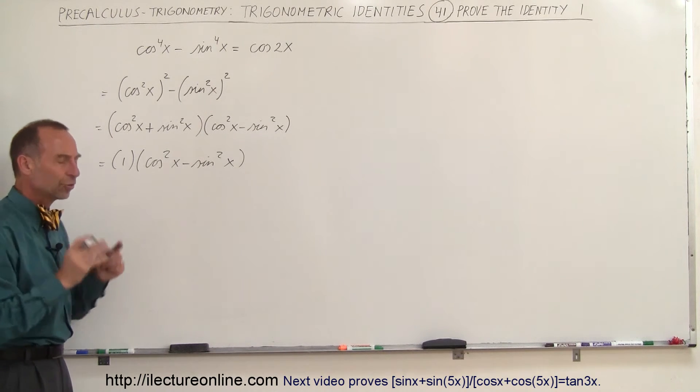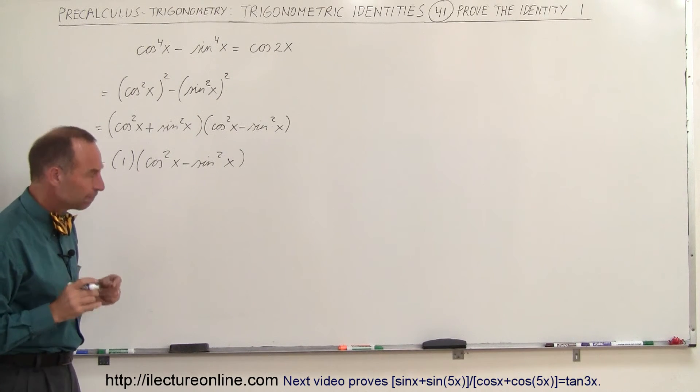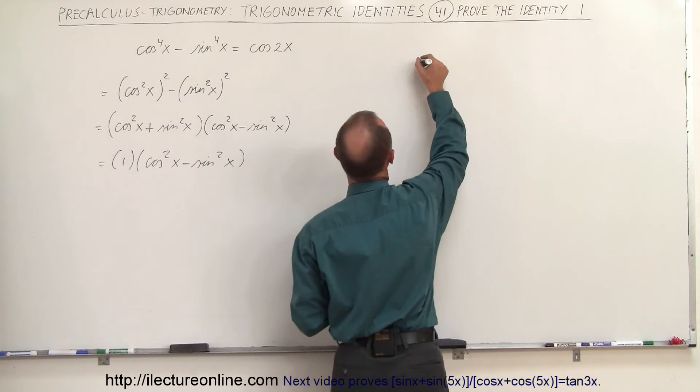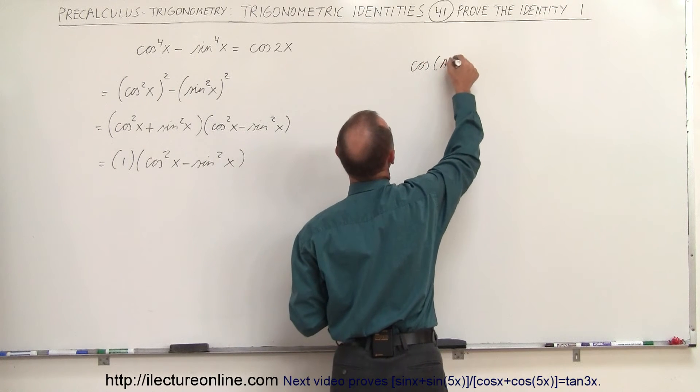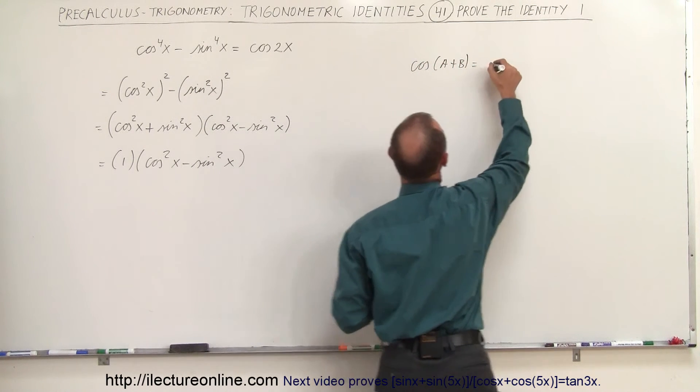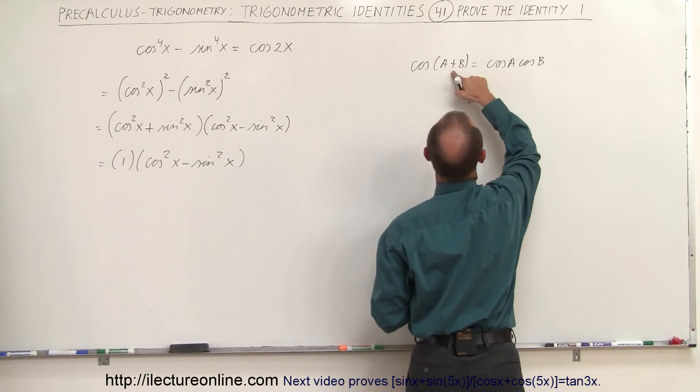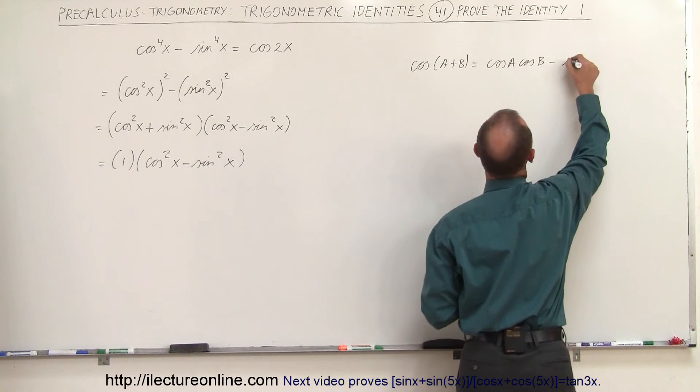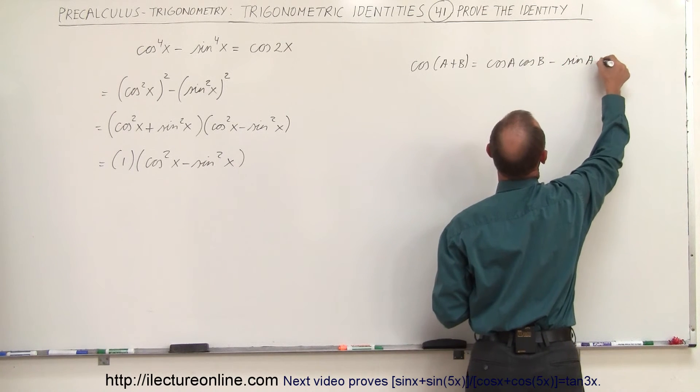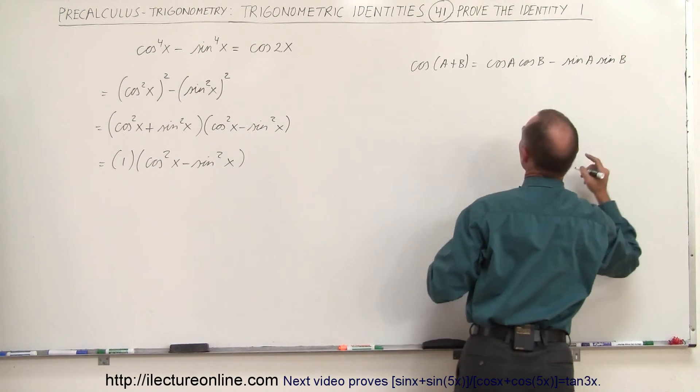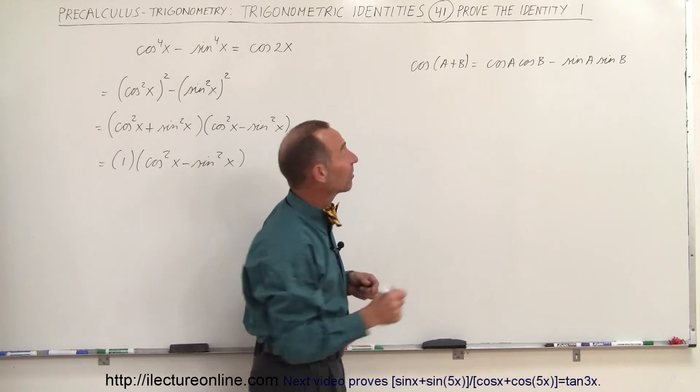Now what I'm going to do here is go back and remember this one. If we have the cosine of a plus b, that is equal to the cosine of a times the cosine of b, and if this is plus that becomes minus sine of a sine of b. And then if I make that a plus a, let's see what happens.